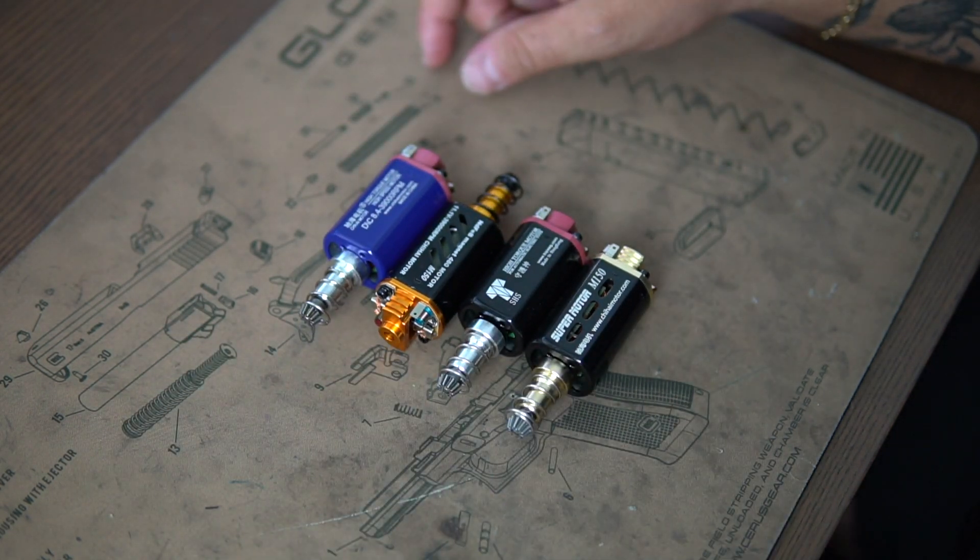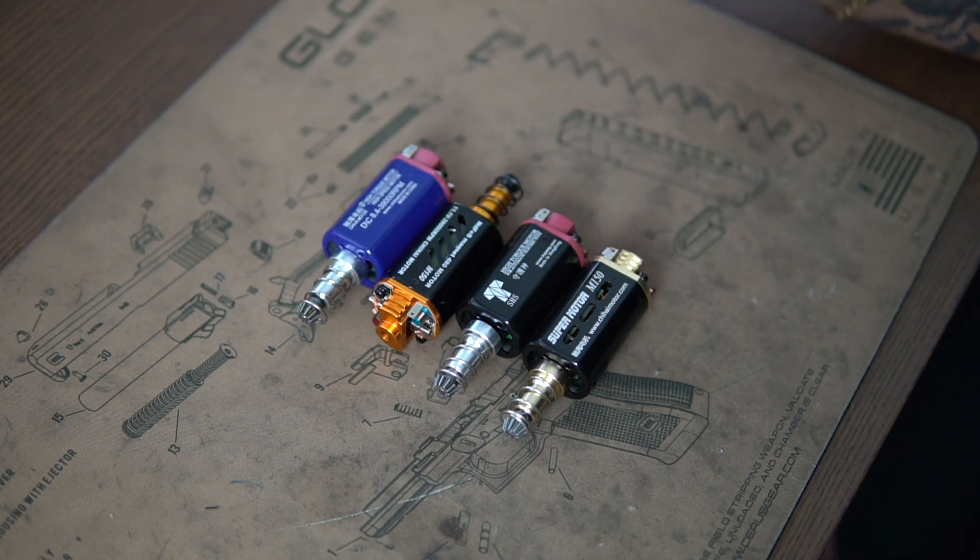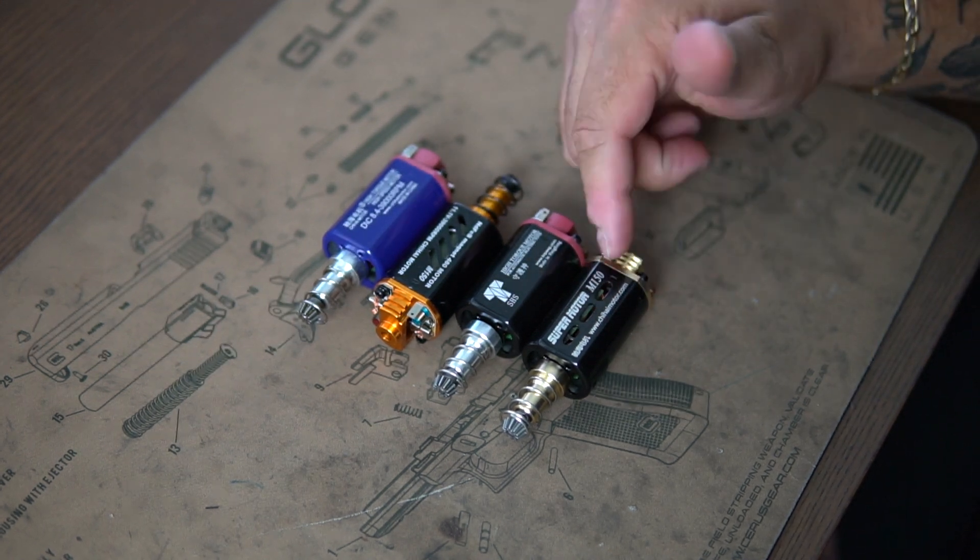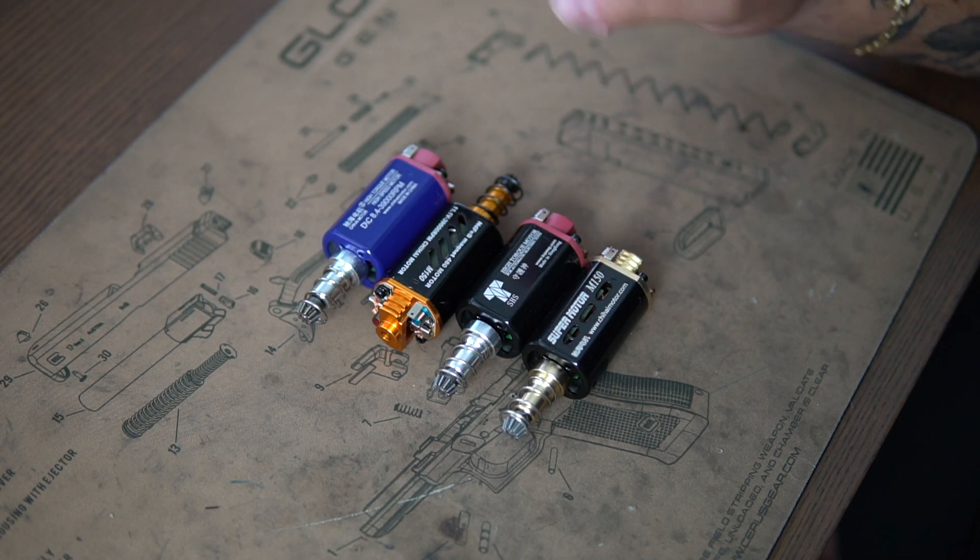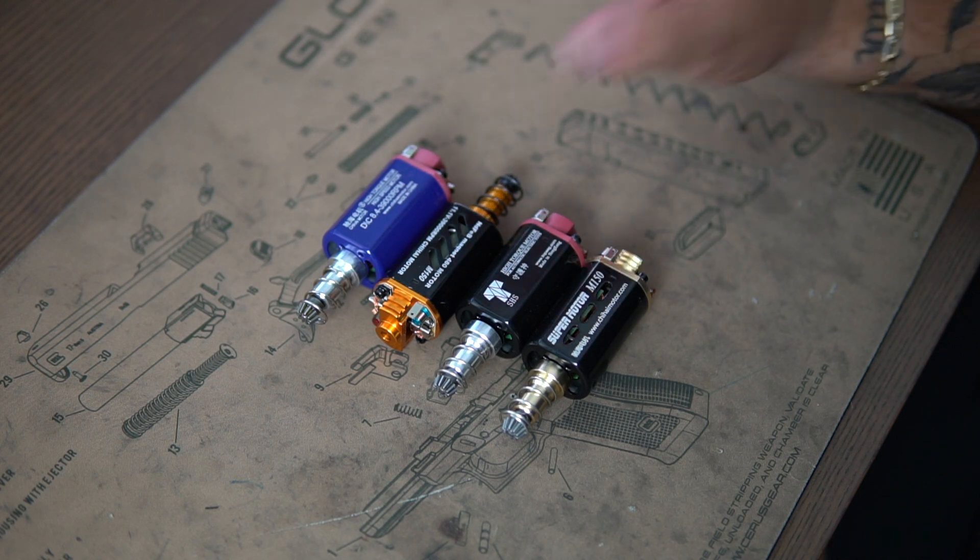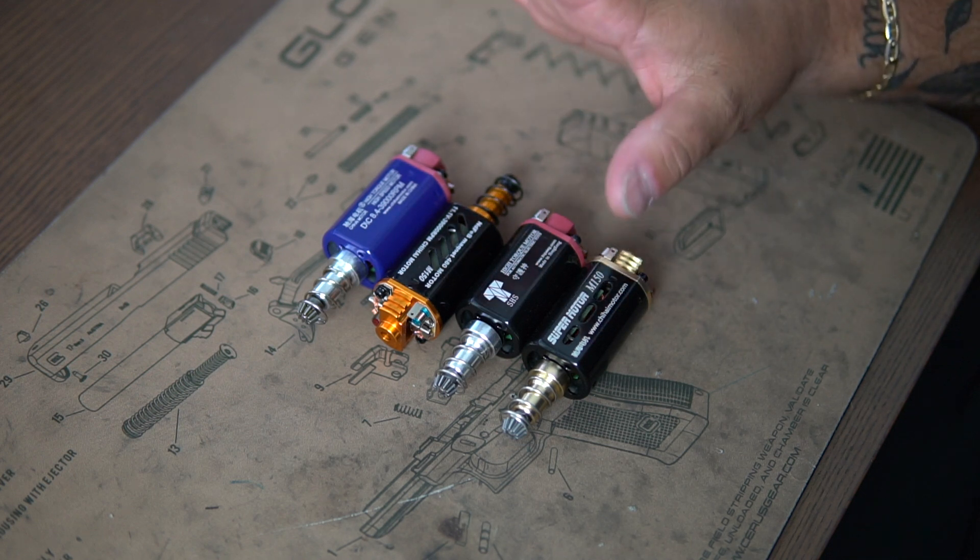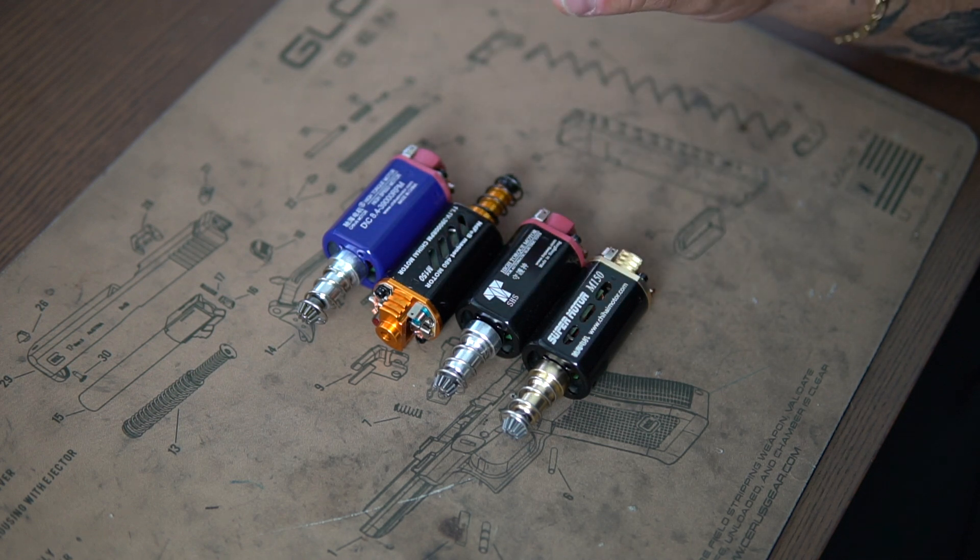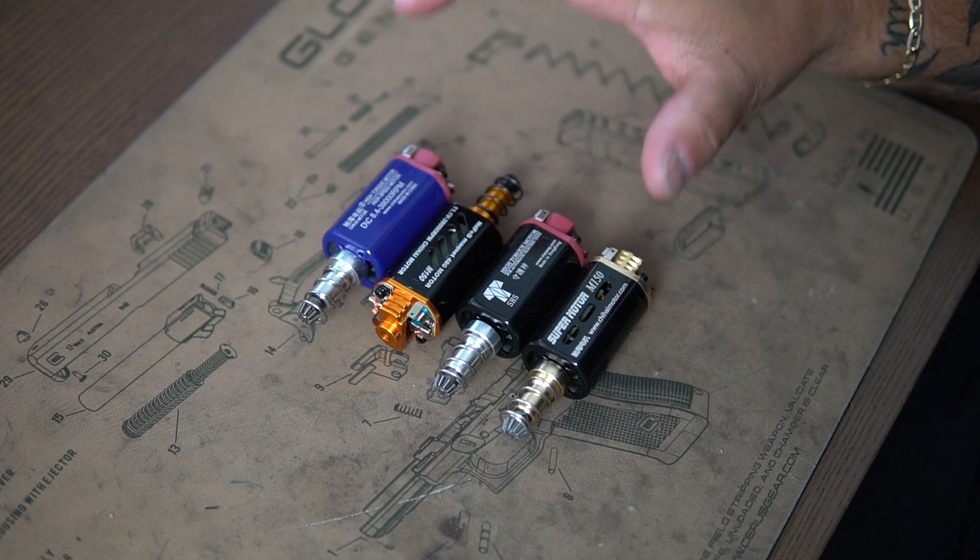So let's start with our super motor, our Qi High M150 super motor. Now it is called an M150 because it supposedly can take an M150 SHS upgraded spring, which it can, but we've just found through our R&D that max up to an M130 spring works perfect with these. They're a great motor. They're a 480 motor.